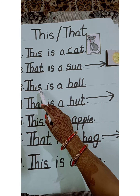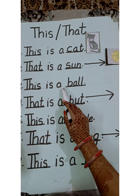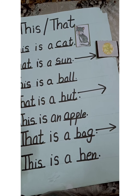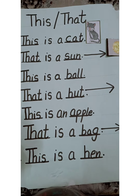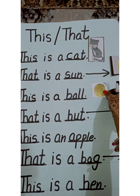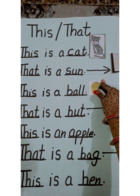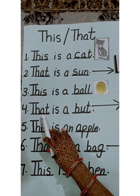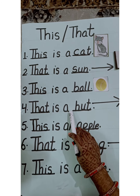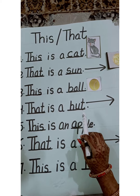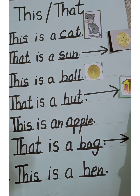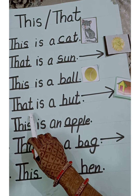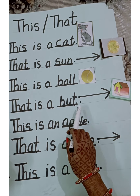Next is: this is a ball. This ball is near to us, so we will say: this is a ball. Next is: that is a hut. That is a hut. The hut is far from us, so we will use 'that': that is a hut.